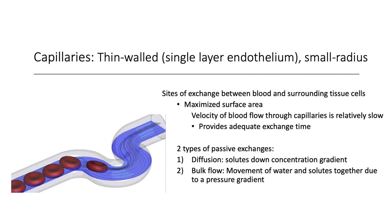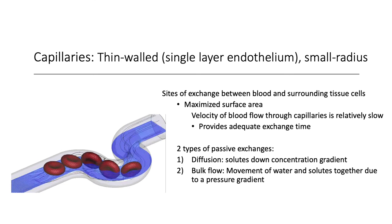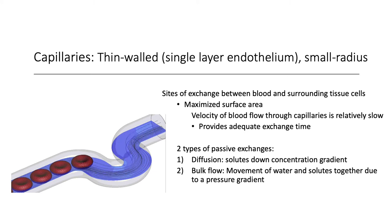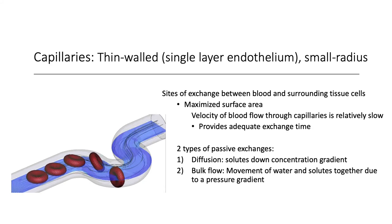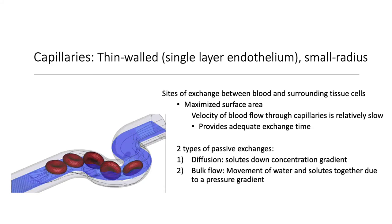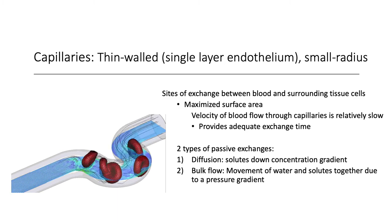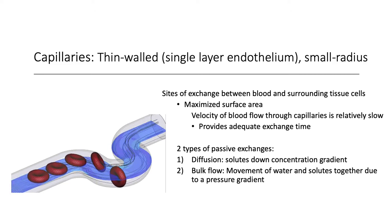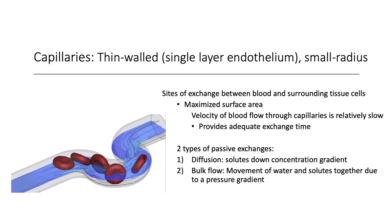The capillaries are thin-walled with a single simple squamous endothelium layer and a very small radius — the width of one red blood cell. This is ideal for maximizing the surface area and exchange of materials, so all the blood is exposed to the surface of that vessel. The velocity of the blood through those capillaries is also very slow, which allows for adequate exchange time. If we're moving slowly through the capillary, we have time to exchange materials.